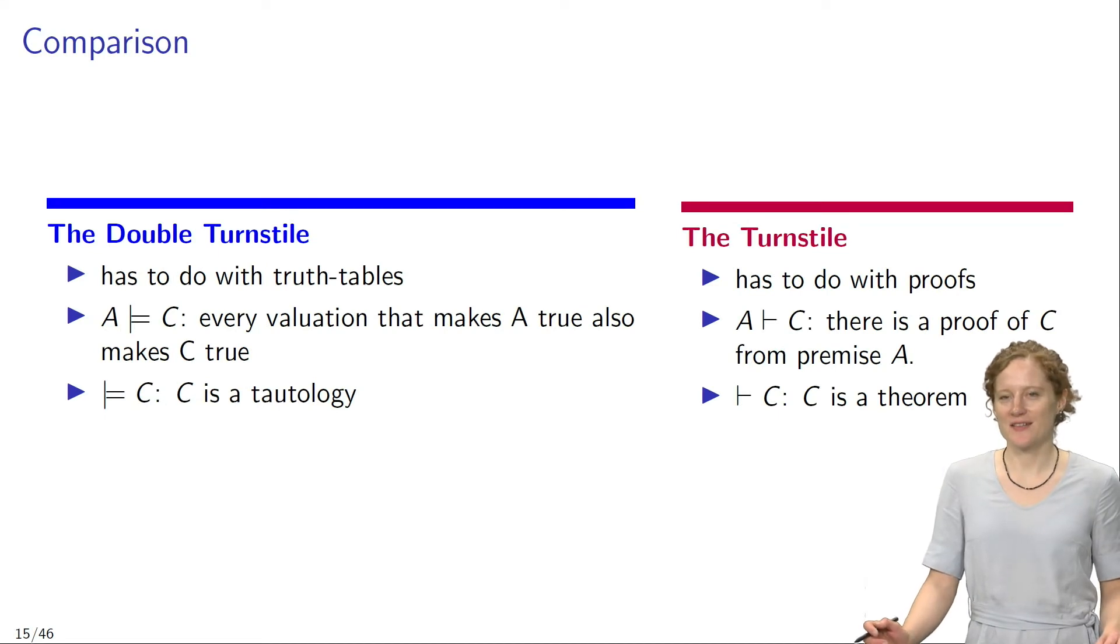Let's finish off our discussion by comparing the double turnstile with the turnstile. The double turnstile has to do with truth tables. A double turnstile C says that every evaluation that makes A true also makes C true, and that's a property that we can read off in the joint truth tables of A and C. Double turnstile C says that C is a tautology. The turnstile on the other hand has to do with proofs. A turnstile C means that there is a proof of C from premise A, and turnstile C means that C is a theorem.